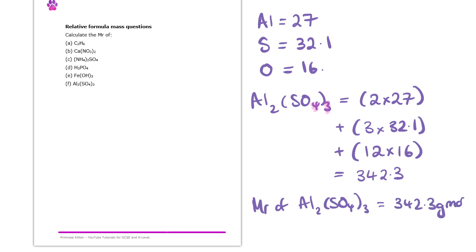That is the end of this exercise. It's such an important thing to understand how to calculate relative formula mass — particularly important for formulas that have brackets in them. As time goes on, you'll really see the importance of this, as we will learn how to calculate moles, which involves knowing Mr values. Good work, and I'll see you on the next exercise.